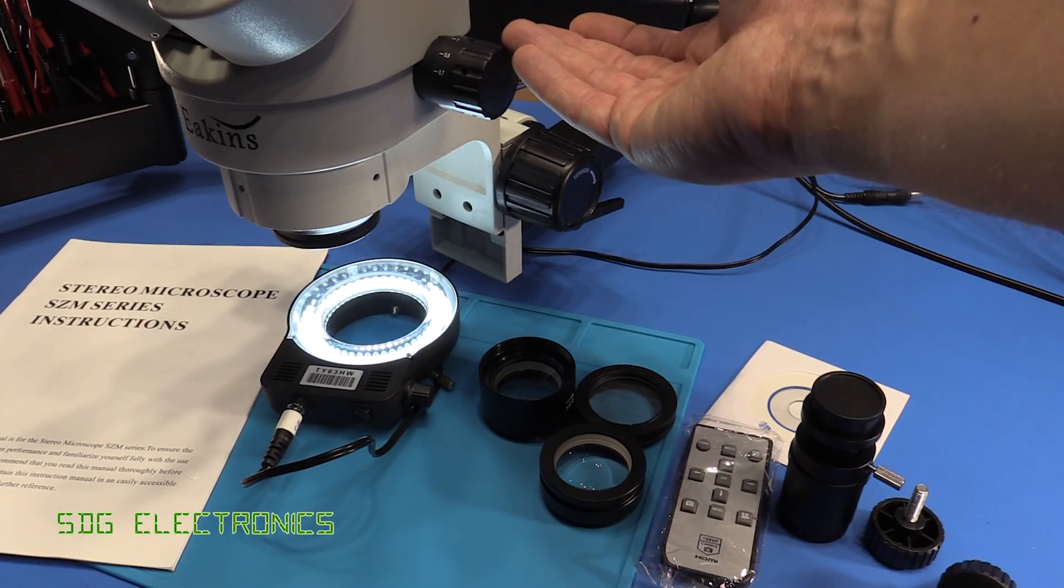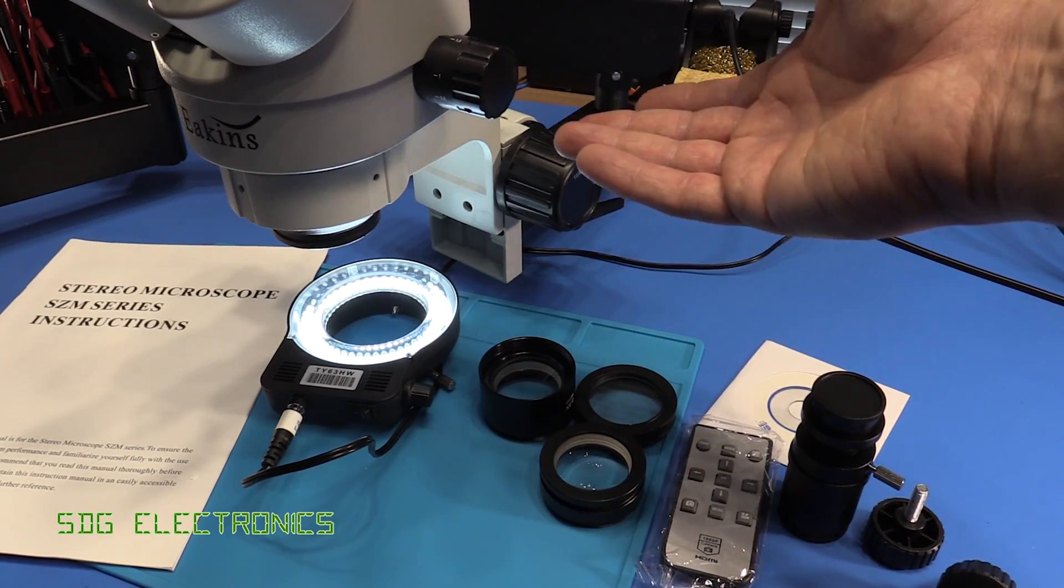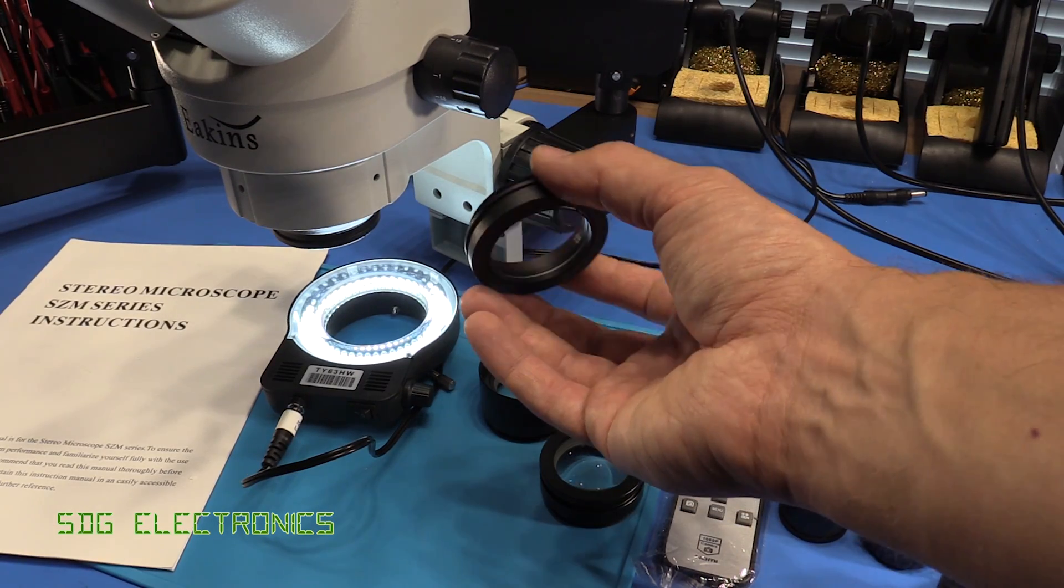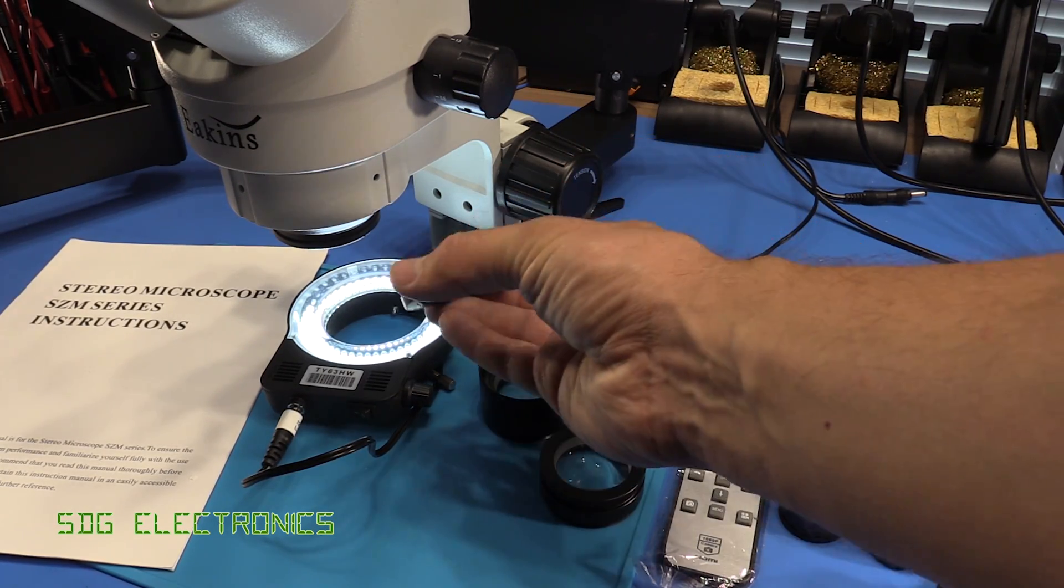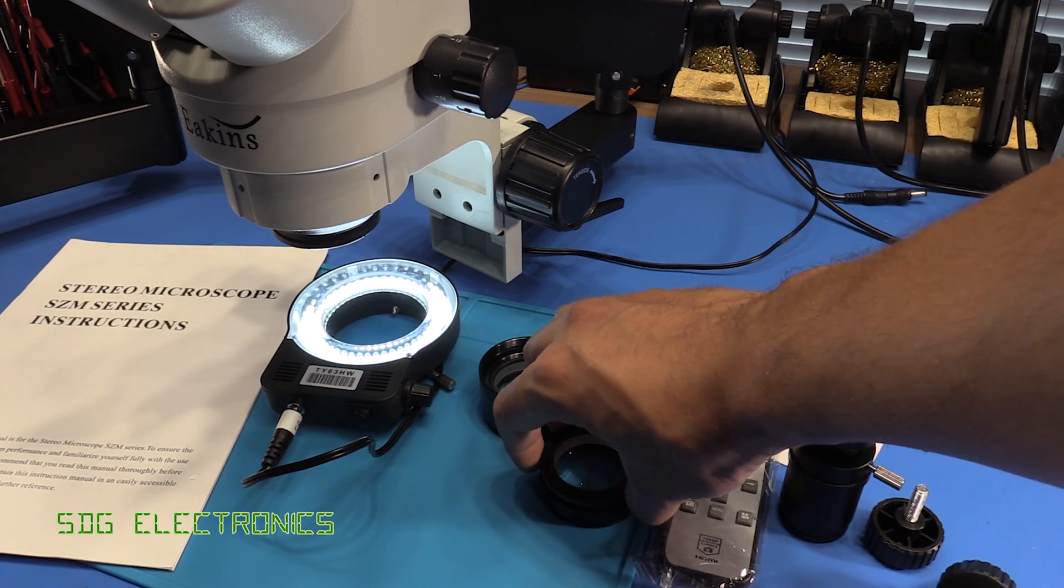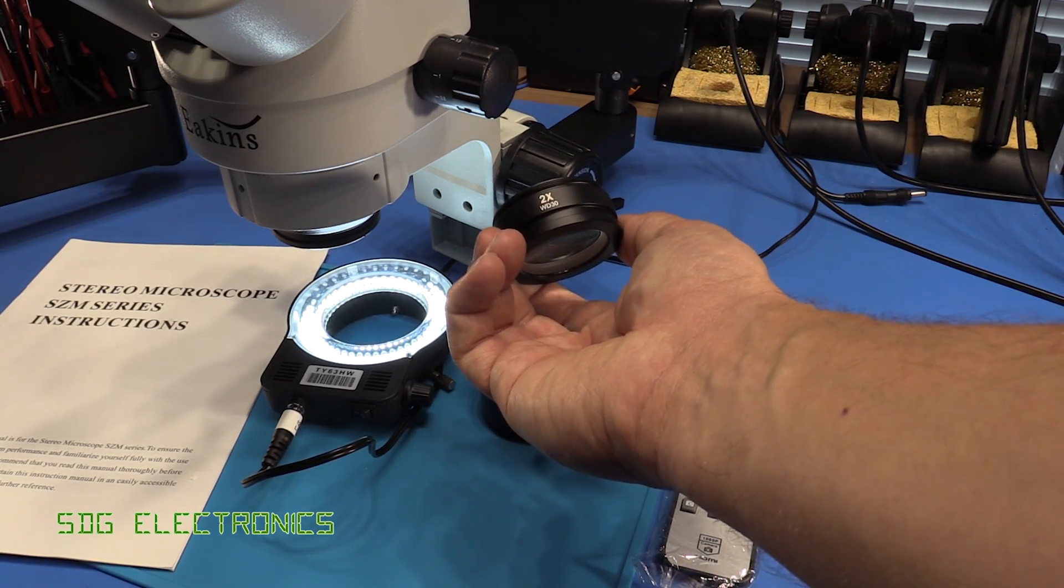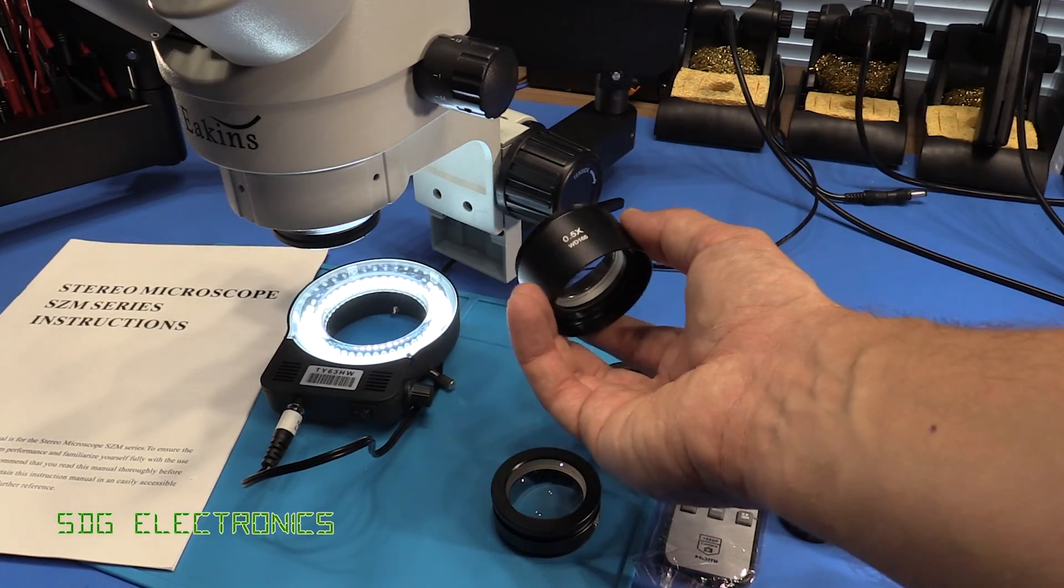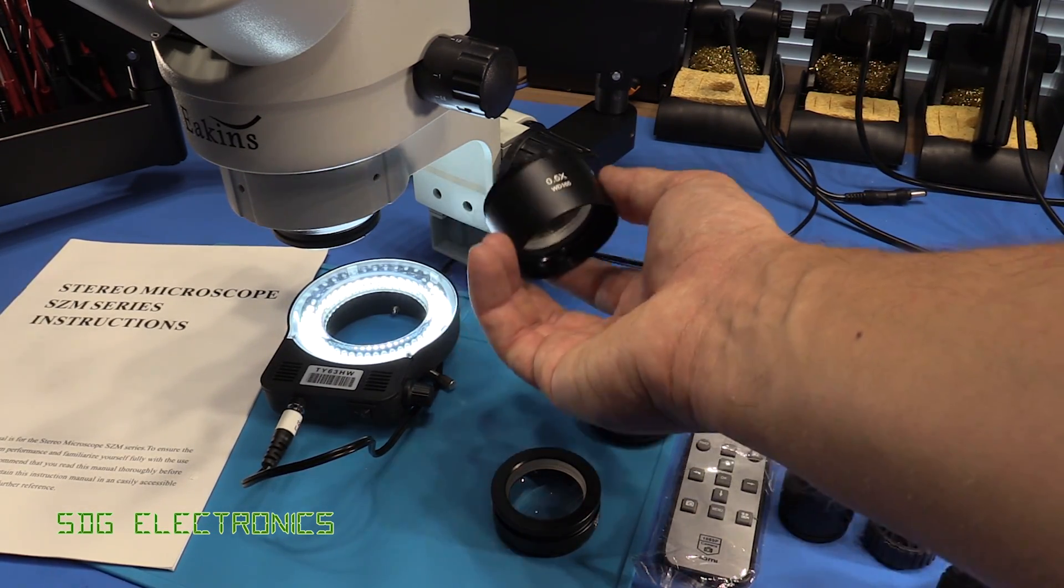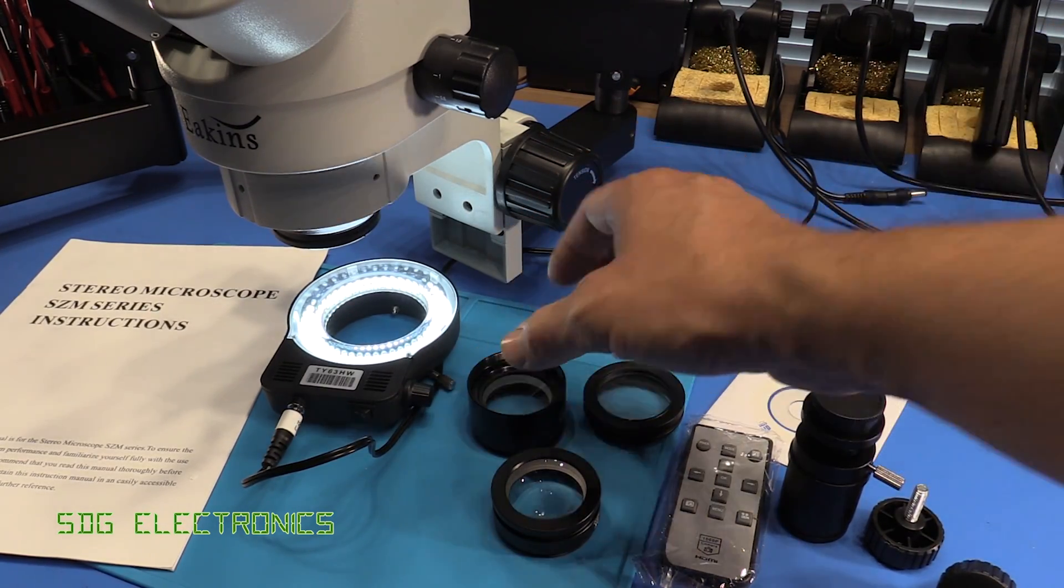By default the microscope head has a continuously variable zoom in the range of 7 to 45, and in that case you'd normally just attach this 1x lens to the bottom of the microscope head just to protect the lenses at the bottom. Then you get two additional lenses: here we've got a 2x lens which gives you up to 90x zoom, and then you've got the 0.5x lens which gives you the lower end, so from 3.5x.